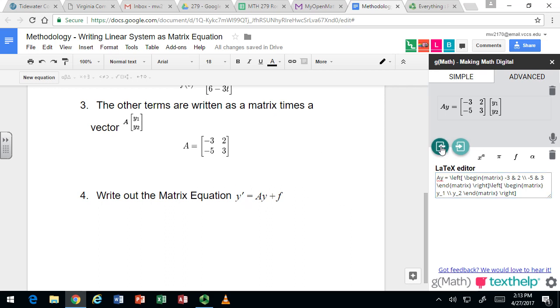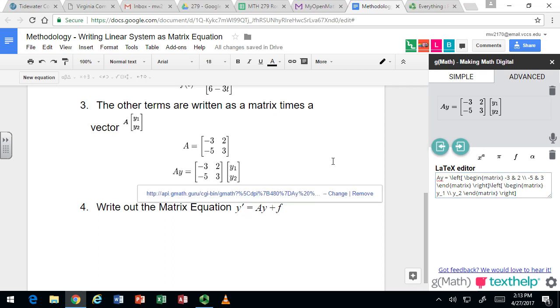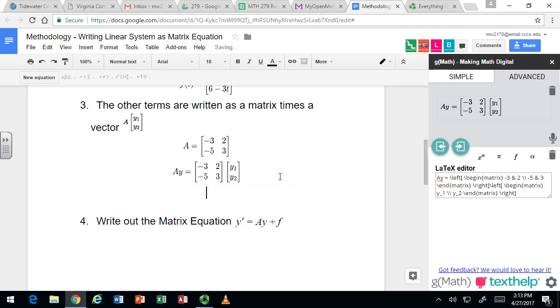And then if you use matrix multiplication, we would multiply the first row times this column. So this would give us negative 3Y1, 2Y2, negative 5Y1, and 3Y2.